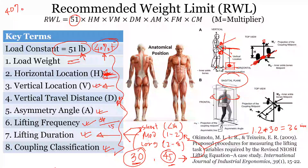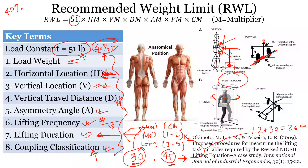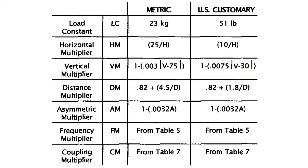Coupling classification refers to how easy or difficult it is to hold an object. If it has a good handle, it has good coupling; otherwise it is fair or poor. The NIOSH lifting equation document — linked at openeducator.com — explains how to classify coupling as good, fair, or poor.